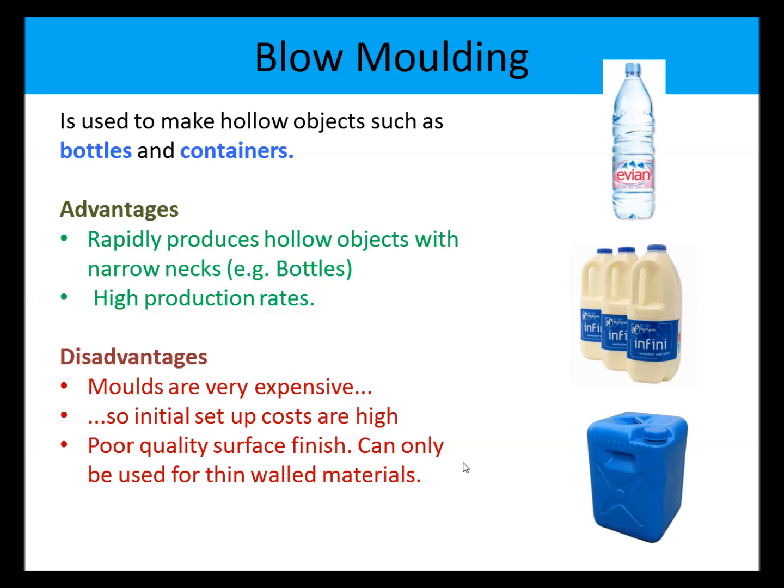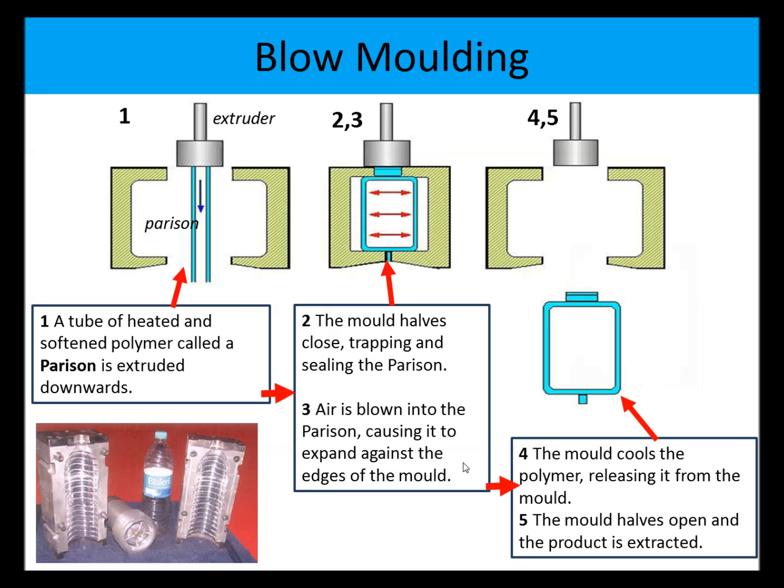Blow molding is used to make hollow objects such as bottles and containers. The advantage is it rapidly produces hollow objects like bottles at very high rates of production — a very high mass production process. The disadvantages are that setup costs are high, the steel moulds are expensive to machine, they can only be used for relatively thin-walled materials, and the surface finish on the outside of the product is always poor quality.